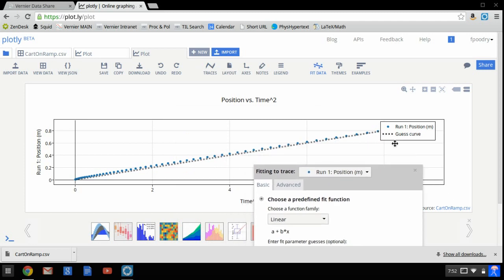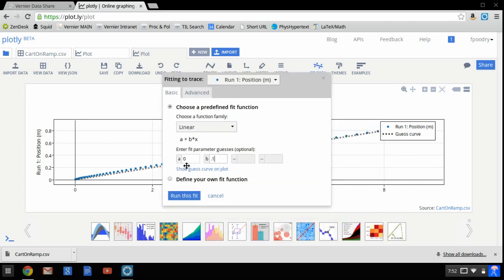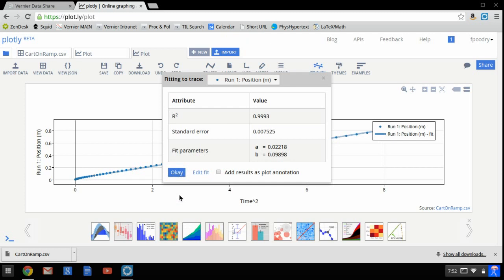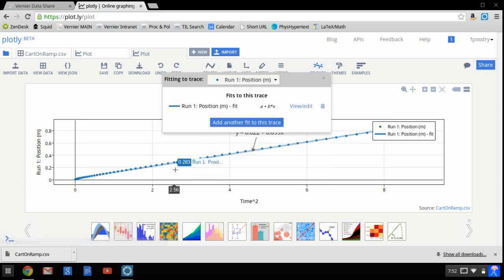Yeah, I'm pretty close. That's not bad, actually. But then I'm going to go ahead and run the fit. So now the computer is going to actually figure out what the real values should be. So here I have a slope of 0.098, which is very close to 0.1, and I have an intercept of 0.02, which is close to zero. I'm going to add the results as a plot annotation and say OK.